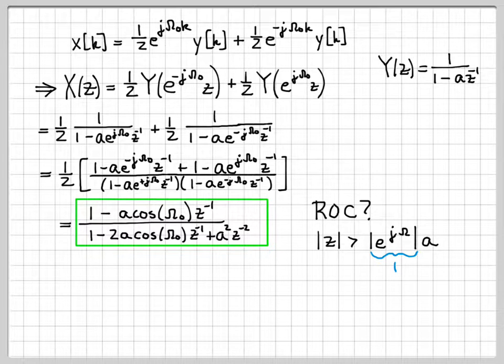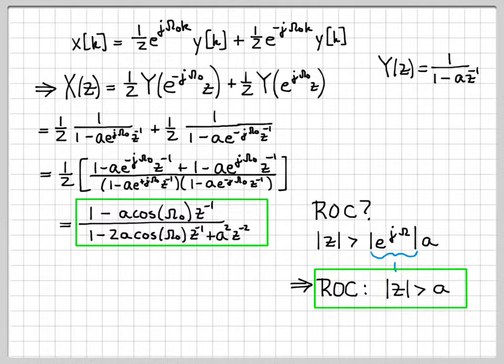So in terms of this region of convergence, it's not going to shrink or grow at all. Its magnitude is going to stay the same in terms of where it is located relative to the origin. The region of convergence looks exactly the same—it hasn't gotten any bigger or smaller.